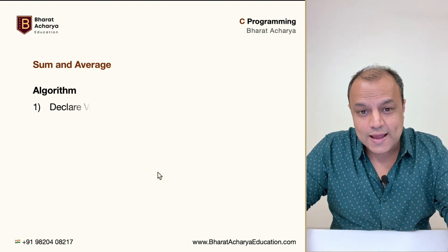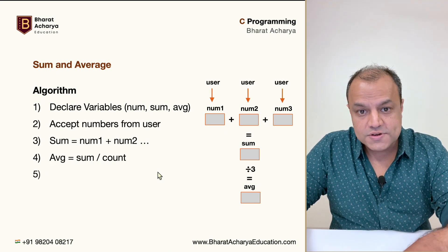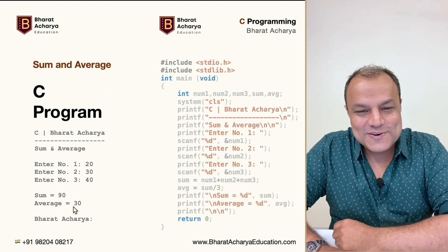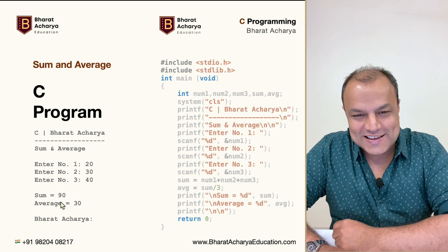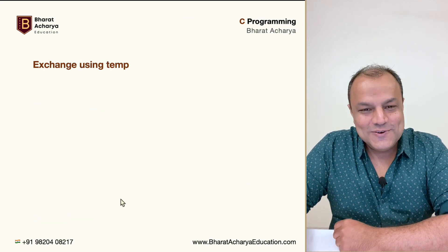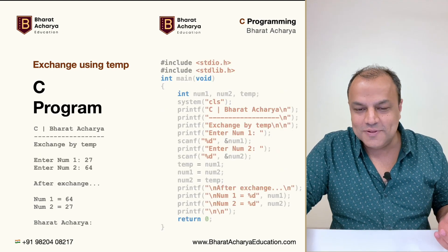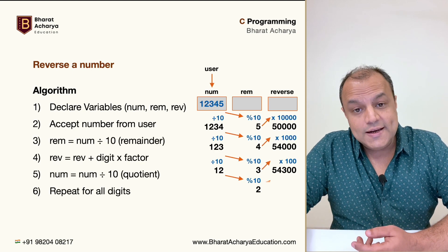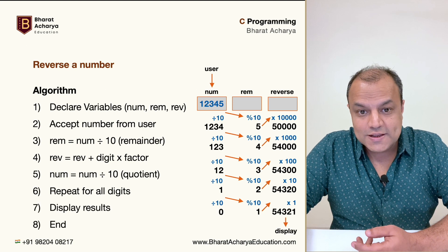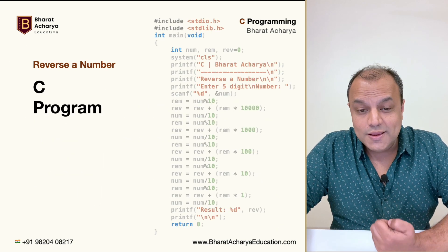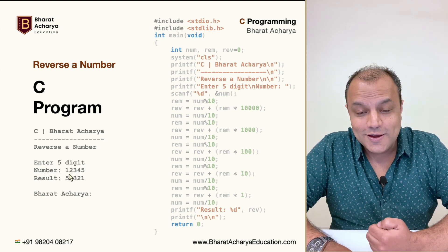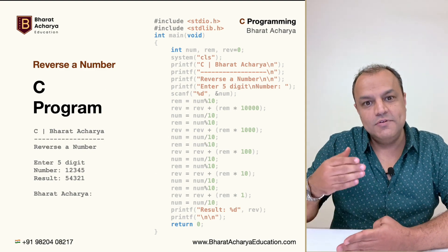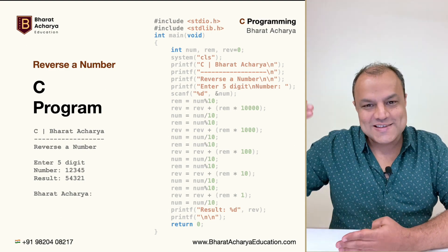Every program we do, as always, we first build the logic: I'll create the algorithm, show you how it works at every step. Once you're absolutely clear on what you're going to do, then we write the code and execute it — that's how the result is going to look on your output screen. Then we go ahead with exchange two variables — the same thing: whole logic, then the program, then execution, with temp variable and without a temp variable. Then the big program to reverse — the logic is going to be intense, so I want your full concentration.